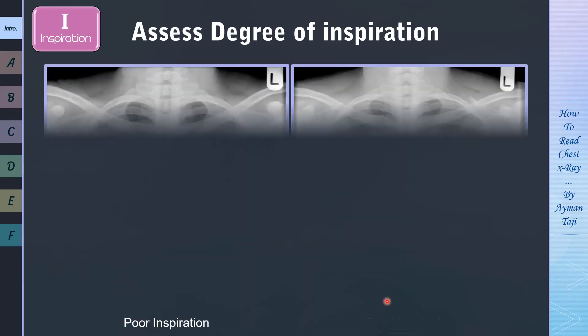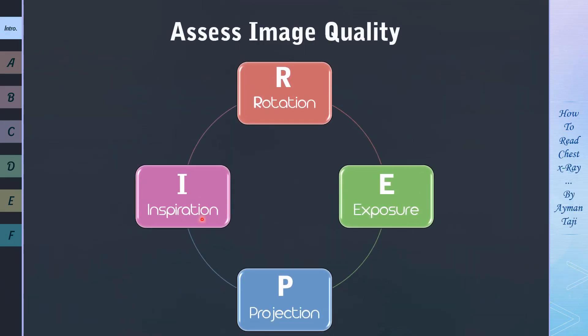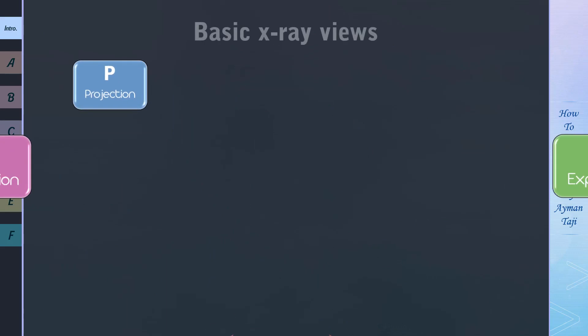And here is an example of expiratory film versus inspiratory film for the same patient. We can see how here lung bases appear whiter and heart size appears larger in the expiratory film. Now after rotation and inspiration, let's move on to projection.